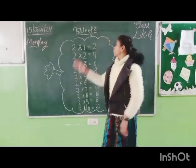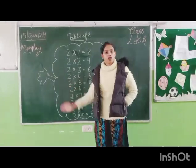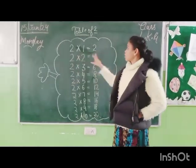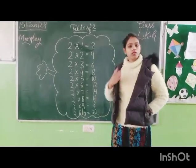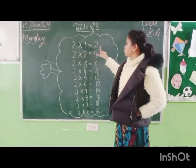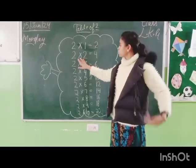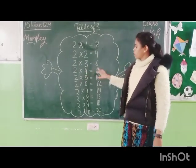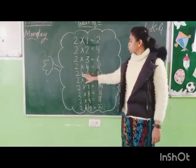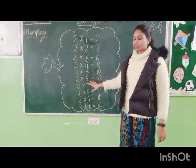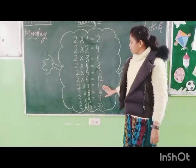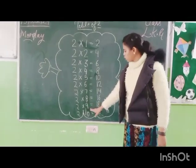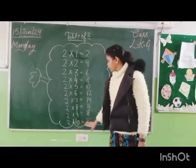We already covered this topic in our class and we are here to again cover the table of two. You have to read with me. Two ones are two, two twos are four, two threes are six, two fours are eight, two fives are ten, two sixes are twelve, two sevens are fourteen, two eights are sixteen, two nines are eighteen, two tens are twenty.